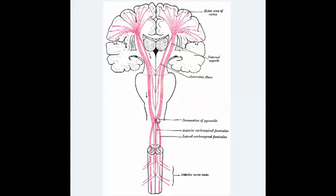At this point it's the pyramidal decussation, as you can see happening here. After the decussation of the pyramids, the tract descends contralaterally until it reaches its first synapse. That synapse is at the cell body of the anterior horn of the spinal cord, as you can see in the picture. This is the first synapse — the first neuron — and this constitutes the upper motor neurons.